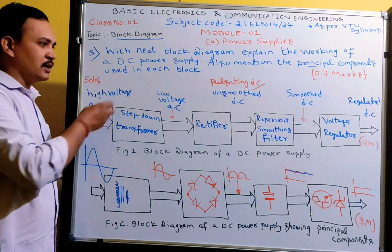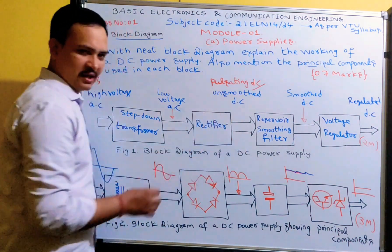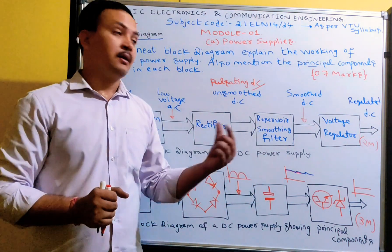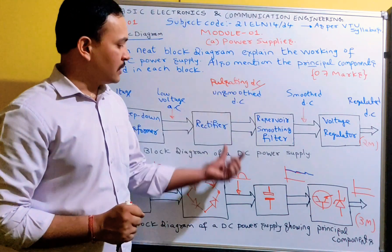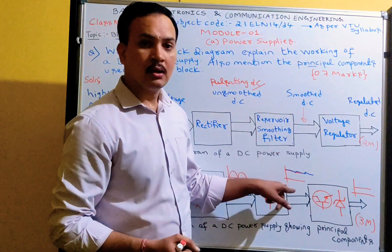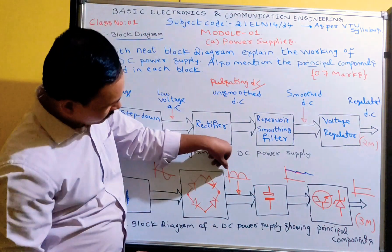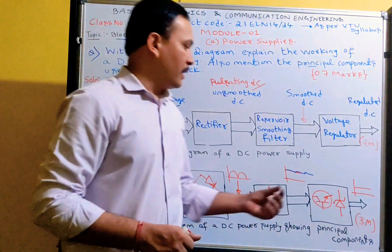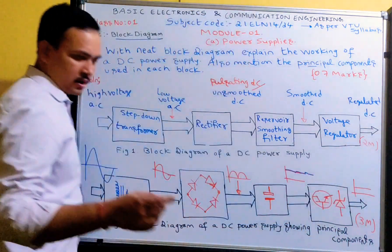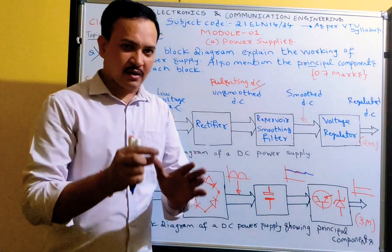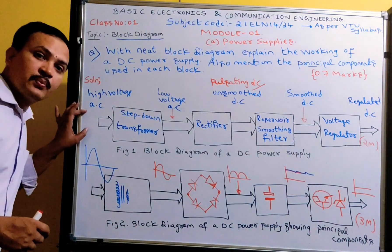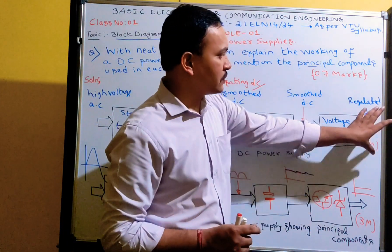For the explanation, write two marks' worth: the step-down transformer converts high voltage AC into low voltage AC; the rectifier converts AC to DC; the reservoir circuit eliminates the ripples in the unsmoothed DC waveform by removing the AC component, leaving only the magnitude; the output is smoothed DC. A key point to write: the output of the voltage regulator is regulated DC that maintains constant output voltage in spite of any variations in load current as well as mains input voltage.